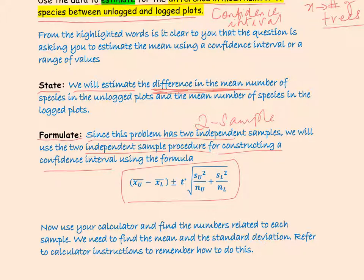When writing down the Formulate portion of the four-step process, it's important to write down the formula. The formula tells us exactly what we need: a t*, the means of the two samples, the standard deviations of the two samples, and the sample sizes of the two samples. Since we're given raw data, we need to use our calculators to find the mean and standard deviation of each sample.